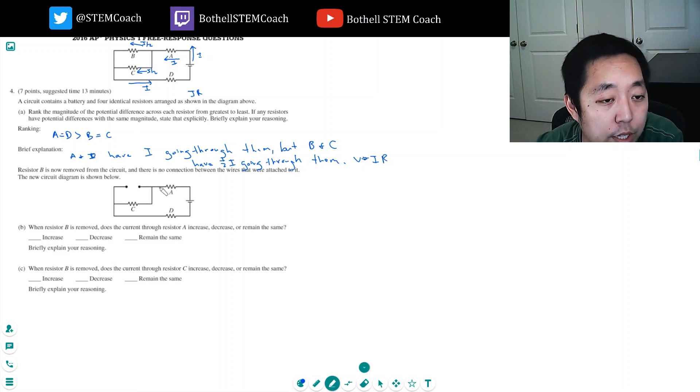Resistor B is now removed from the circuit and there's no connection between the wires attached to it. The new circuit diagram is shown below. When resistor B is removed, does the current through resistor A increase, decrease or remain the same?